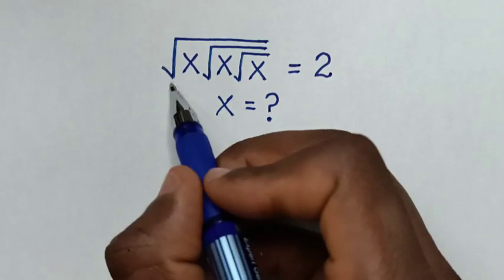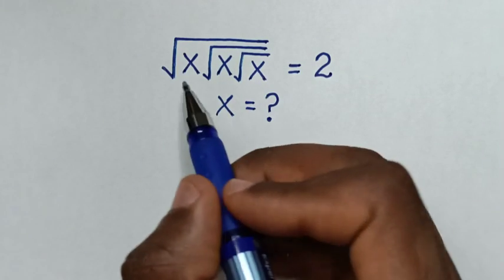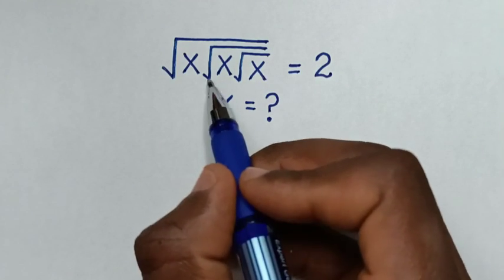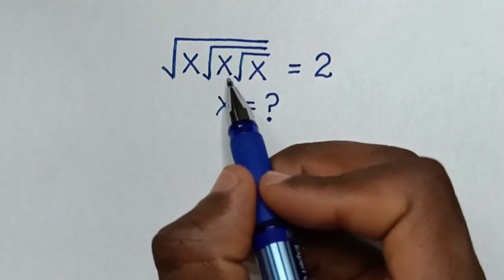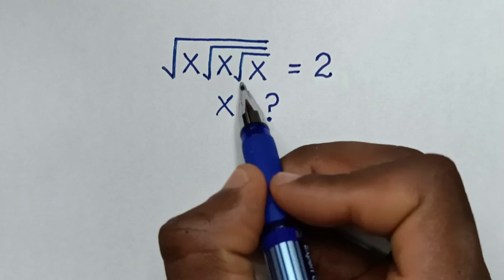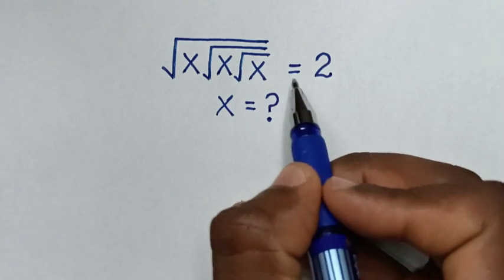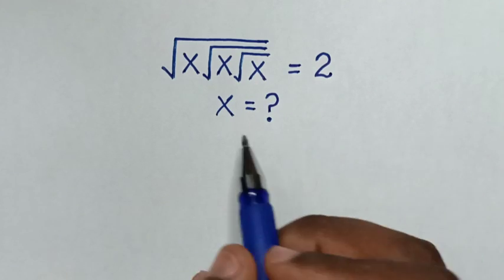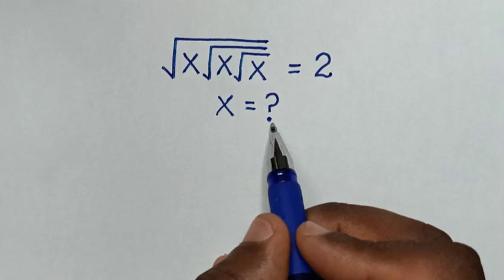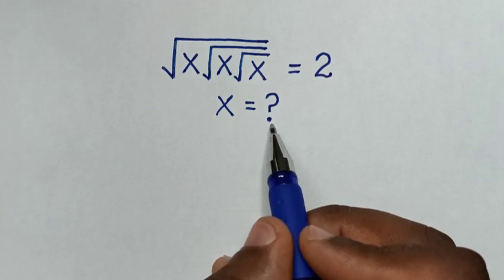Hello! How to solve: square root of x under square root of x under square root of x is equal to 2 — to find the value of x from this equation.